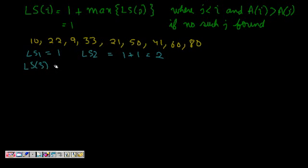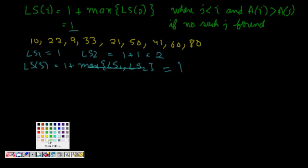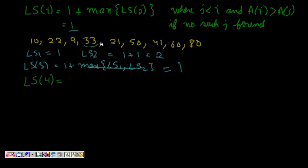For LS(3), we consider LS(1) and LS(2). But 9 is less than 22 and also less than 10, so neither fits. No j is found, so LS(3) = 1.